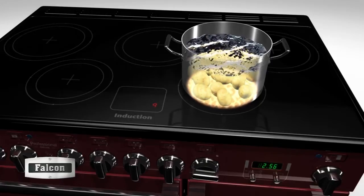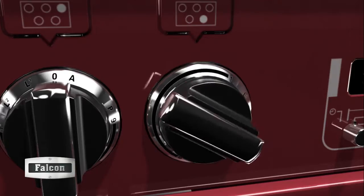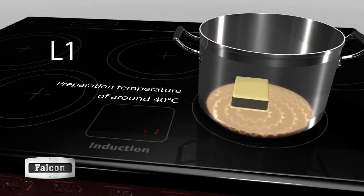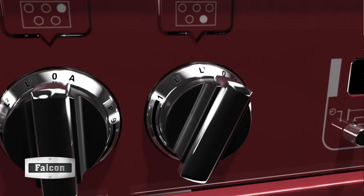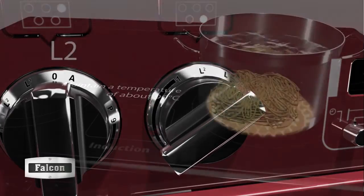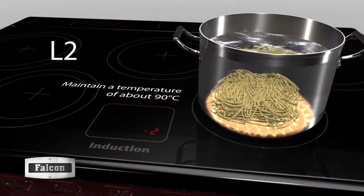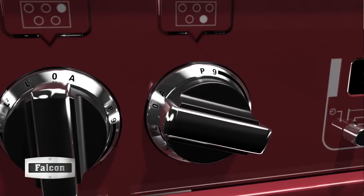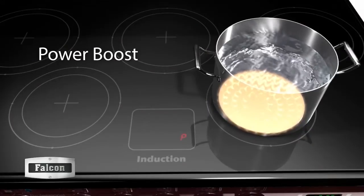There are two pre-fixed low temperature settings. The preparation setting L1 is ideal for gently melting butter or chocolate. The L2 setting is ideal for keeping pasta, rice, stock etc. at an optimal simmering temperature. Power boost allows 10 minutes of additional power, useful for bringing a large pan of water to the boil very quickly.